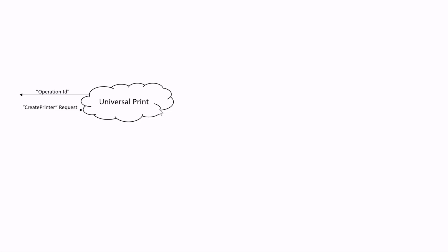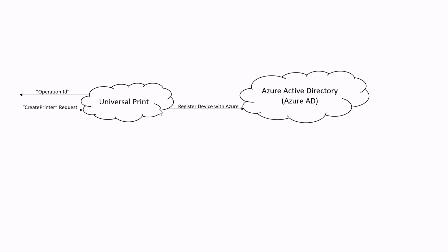When Universal Print gets a registration request, it registers the device with the Azure Active Directory. It starts the registration process in the background and returns the operation ID in the response header. You can use the operation ID to get the status of the registration. Universal Print registers the device with the Azure AD using a Certificate Signing Request, or simply called CSR.